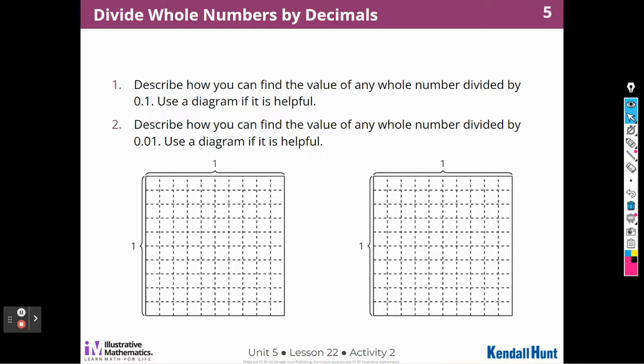Describe how you can find the value of any whole number divided by one tenth. Use the diagram if it is helpful. I can multiply the number that I'm dividing by 10 if I'm dividing by one tenth. So let's say it's 6 divided by one tenth. So 6 divided by one tenth, I would have 6 of these squares, and there's a tenth. So how many would that be? I could also write it like that. That would be 60 because there are 10 of these in here. I can multiply the whole number by 10 if I'm dividing by one tenth. I can use a diagram to show why there are 10 one tenths in each whole.